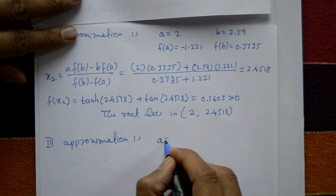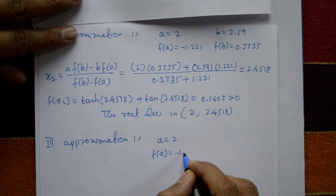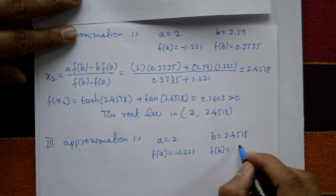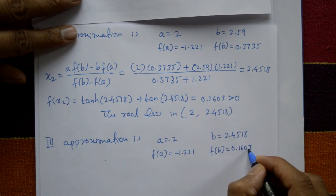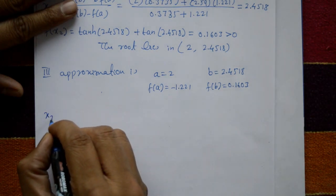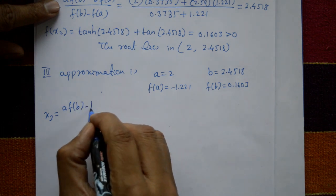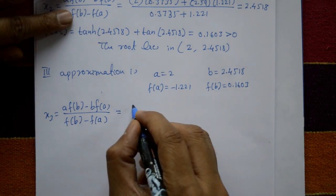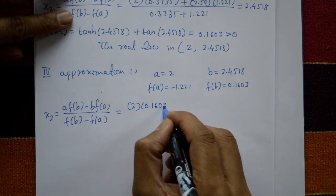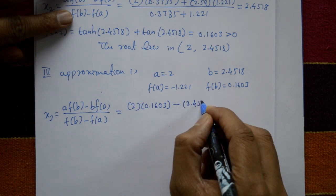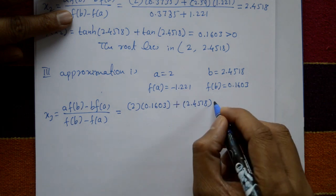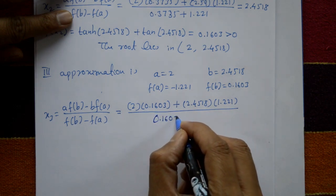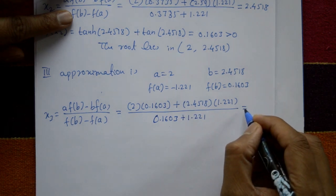For the third approximation: a = 2, f(a) = -1.221 (unchanged). b = 2.4518 and f(b) = 0.1603. Using the formula: x3 = [2 × 0.1603 - 2.4518 × (-1.221)] / [0.1603 + 1.221], which gives x3 = 2.3994.